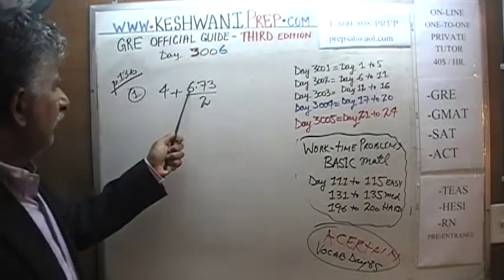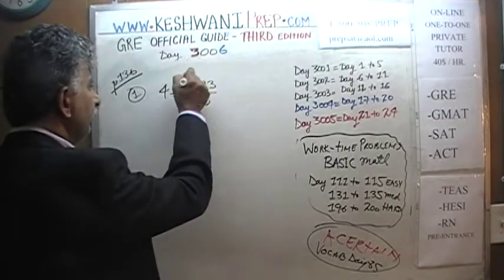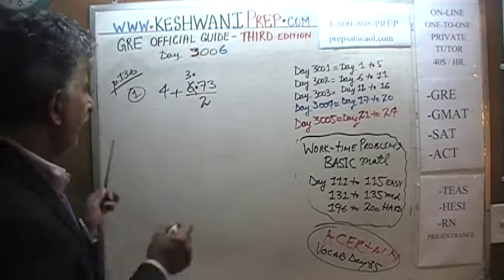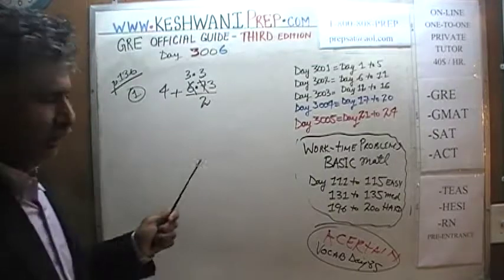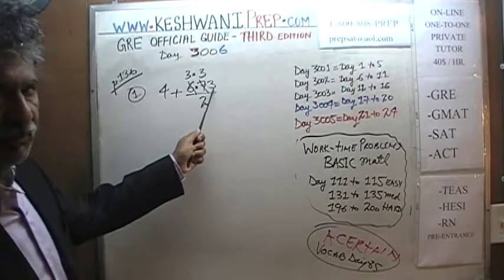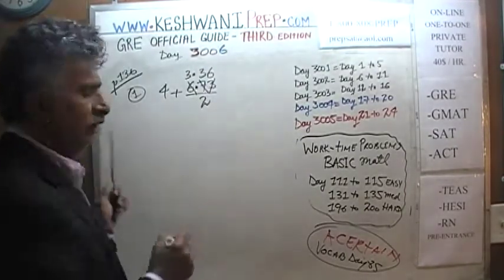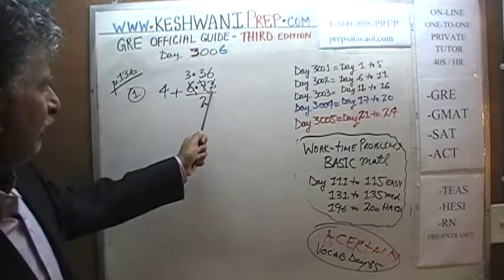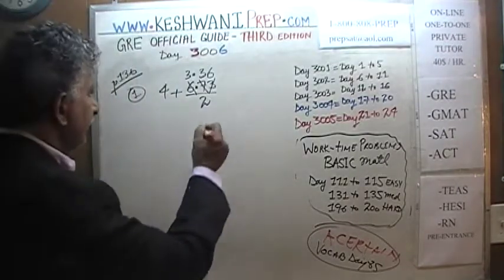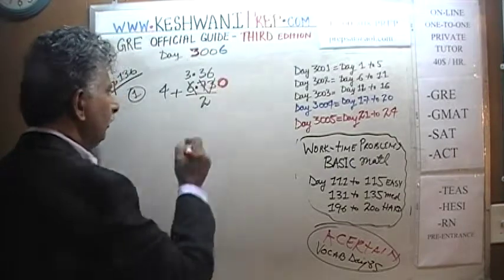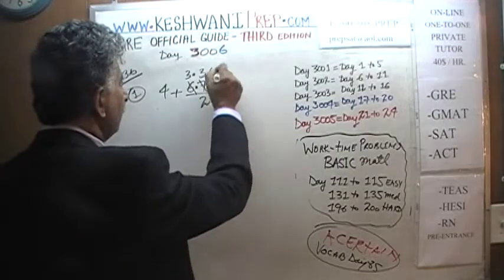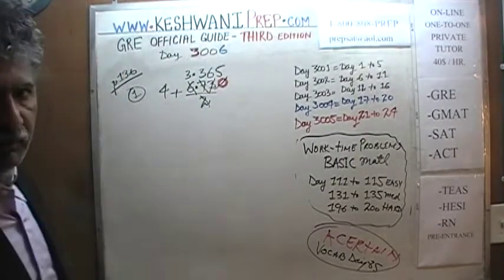Let's divide 6.73 by 2. How many 2's does 6 have? 6 has three 2's. Move the decimal place up. How many 2's does 7 have? 7 also has three 2's — 3 twos are 6. After we take away 6 from the 7, we have a remainder of 1. That 1 goes and joins the 3 and becomes a 13. And 13 has six 2's — 6 twos are 12. After we take away 12 from 13, we have a remainder of 1. That 1 goes and joins a 0 and becomes 10. And 10 has five 2's. Since we divide the top by 2, we must divide the bottom by 2.